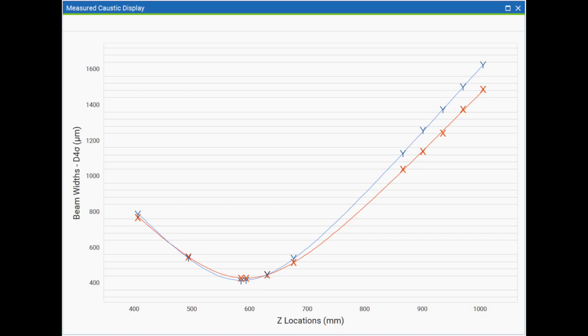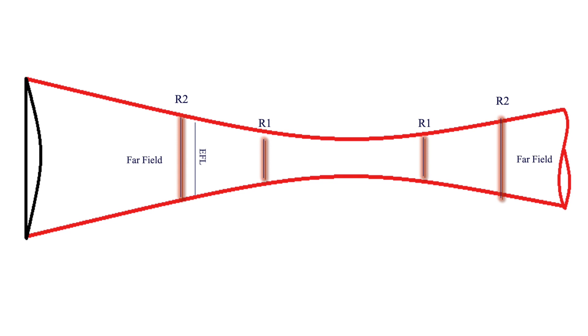Here is a representation of the X and Y beam widths versus the distance from the focusing lens. Beam width measurements are taken at one Rayleigh length about the waist. Then more are taken past the second Rayleigh length in the far field.